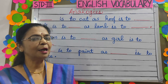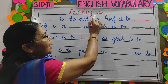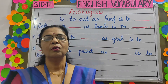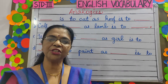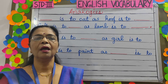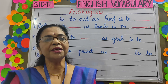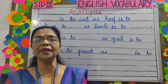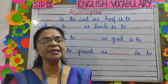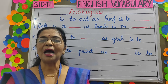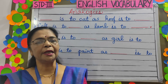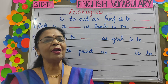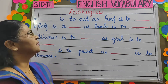Now let's learn about analogies. An analogy compares two things that are mostly different from each other but have some traits in common. Now let's have a look at the examples.